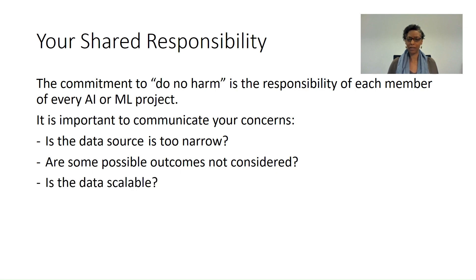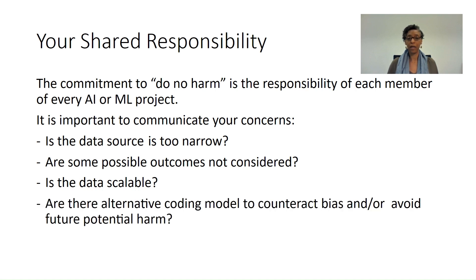Or perhaps the data is not scalable — so while there are no obvious potential harmful outcomes given the current scope of the project, future possibilities of expanded use of the program, dataset, or algorithm could indeed result in potential harm. If you're able and your team is designed to prevent it, one of the best things you can do is to suggest or offer an alternative programming model, a coding model, or a different use of a dataset that might counteract the bias you've discovered. Or you might have to appeal to the entire team to figure out a solution.